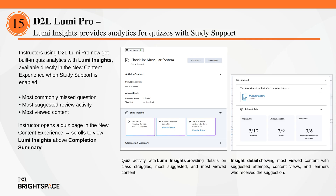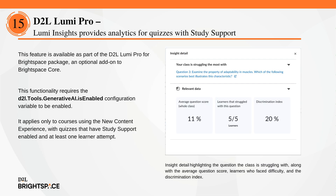Instructors using D2L LumiPro now get built-in quiz analytics with LumiInsights, available directly in the new content experience when study support is enabled. Displayed above the completion summary, Insights highlight the most missed question, most recommended activity, and the most viewed content. Previously, no analytics were shown on the quiz display screen. Now instructors can quickly identify where learners are struggling and which resources are making an impact. To enable, ensure your org is entitled to D2L LumiPro for Brightspace, the Generative AI tool is active, and the quiz with study support is added to the table of contents in courses using the new content experience.